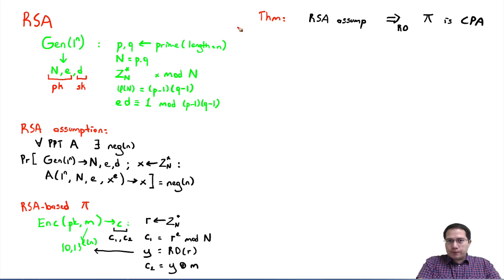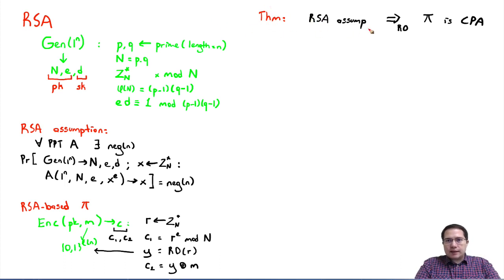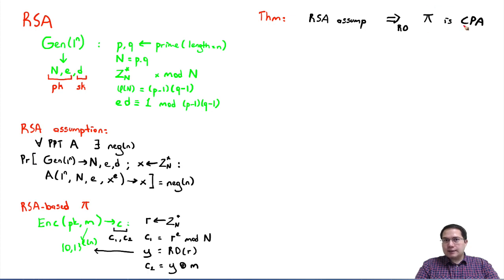The theorem we are going to prove is that if the RSA assumption holds, then our scheme π is CPA secure under the random oracle model.